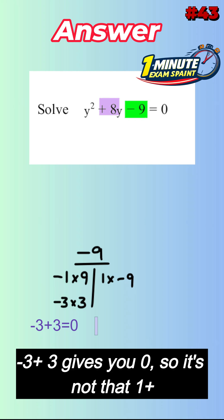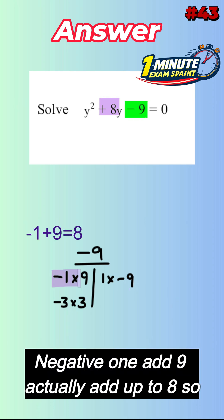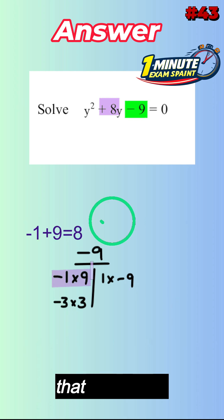Negative 3 add 3 gives you 0, so it's not that. 1 add negative 9 gives you negative 8, that's not it. Negative 1 add 9 actually add up to 8, so that is my pair.